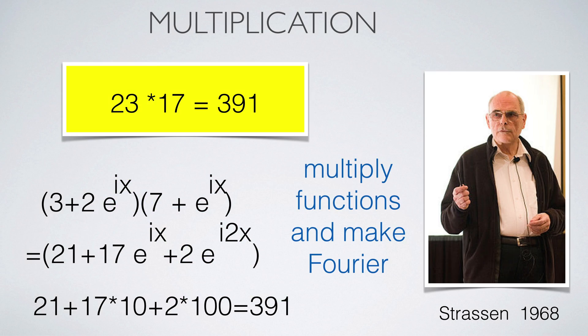One of the coolest applications of Fourier theory is fast multiplication of integers. The classical school multiplication uses n squared steps if the numbers have n digits. This can be done faster by first producing functions from the numbers, then doing the Fourier decomposition of the product. Of course there is overhead so that the method is only used for larger integers.